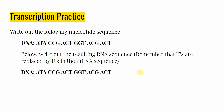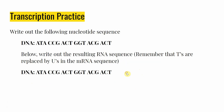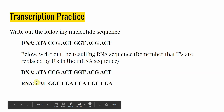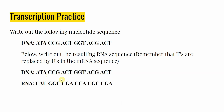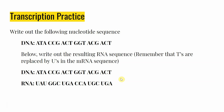Hopefully you didn't have too much trouble. We need to be conscious that our RNA sequence should not have any T's in it — whenever we should have had a T in DNA, there will be a U in the RNA sequence. Whenever we have an A in our DNA, it matches with a U in our RNA, because RNA has uracil instead of thymine. If we have a T, we match it with an A; if a C, we match with a G; if a G, we match with a C. Our full RNA sequence should read UAU, GGC, UGA, CCA, UGC, UGA. Hopefully that was good practice taking on the role of RNA polymerase.